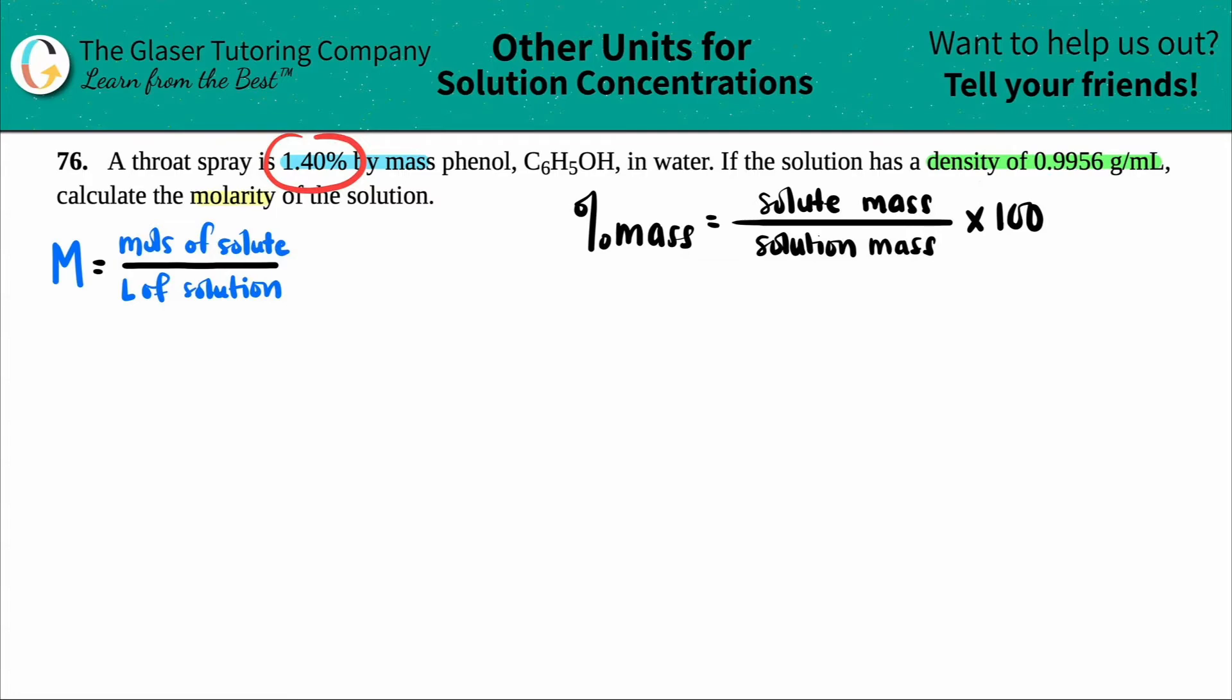They only gave me the percentage value—not the solute mass or solution mass. But maybe from this I can get numbers for the solute and solution. My percent mass was 1.40, and I'm going to equal this to something over something else times 100. The question is, we don't have both of these units, but maybe we can put values in here so that it equals 1.40.